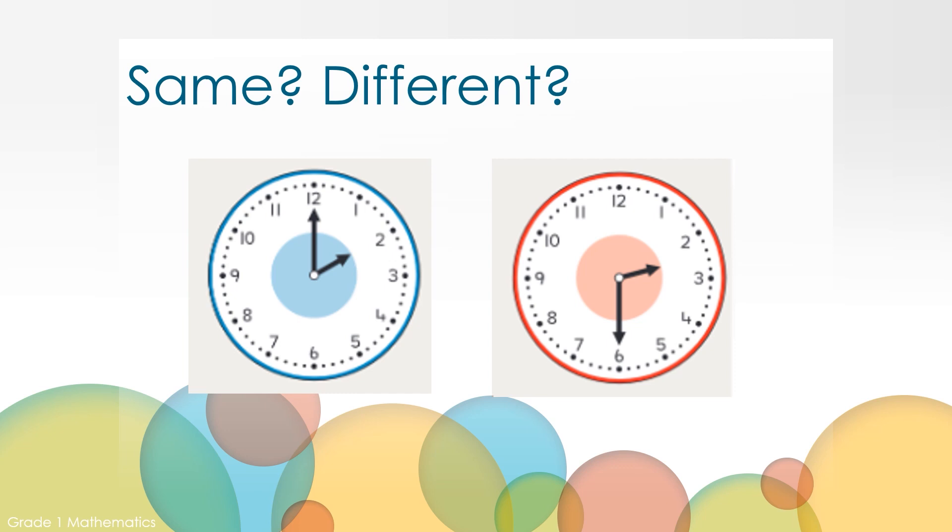Let's get our brains warmed up by looking at these two clocks. What is the same but different? One way these two pictures are the same is they both are analog clocks. They both have an hour hand, which is the short hand, and a minute hand, which is the long hand. They also both have the hour hand pointing within the 2 o'clock hour.